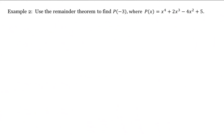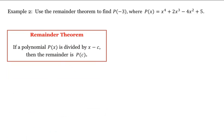Let's look at another example. Again let's use the remainder theorem to find p of negative 3, where p of x equals x to the fourth plus 2x cubed minus 4x squared plus 5. To find p of c we divide p by x minus c, where here c is equal to negative 3. So we divide by x minus negative 3, or x plus 3.